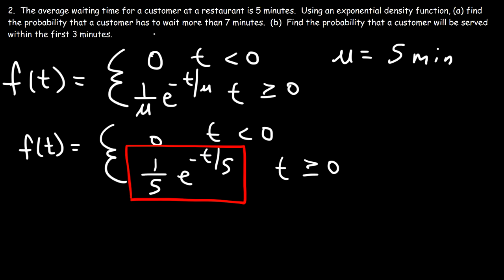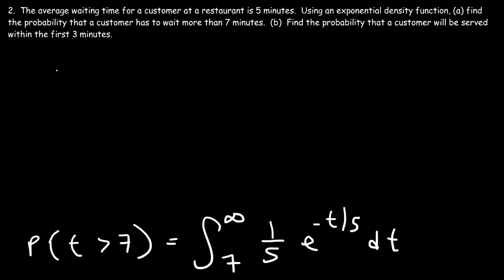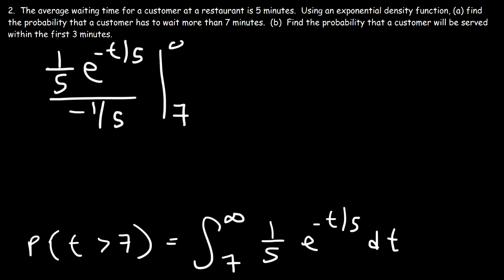To find the probability that t is greater than 7, we evaluate the definite integral from 7 to infinity of (1 over 5) e to the negative t over 5 dt. The antiderivative of e to the negative t over 5 is e to the negative t over 5 divided by negative 1 over 5. The 1 over 5 constants cancel, simplifying to negative e to the negative t over 5, evaluated from 7 to infinity.